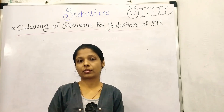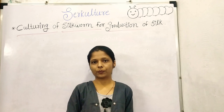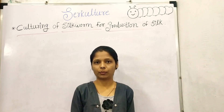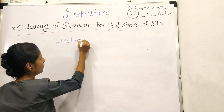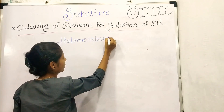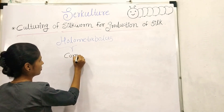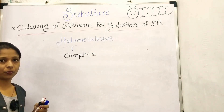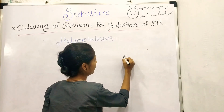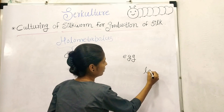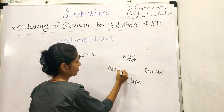Bombyx mori is holometabolous. There are different types of metamorphosis: holometabolous, hemimetabolous, and ametabolous. Holometabolous means complete metamorphosis, which means the organism undergoes four life stages: egg, larva, pupa, and adult.